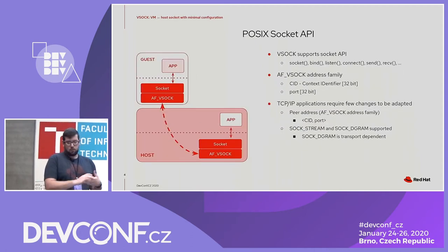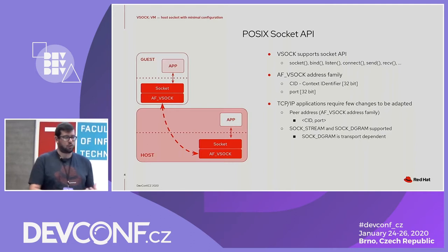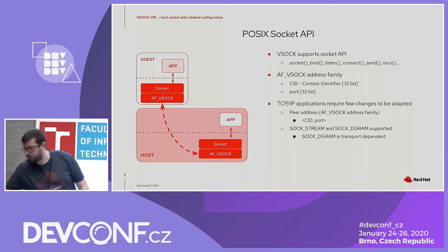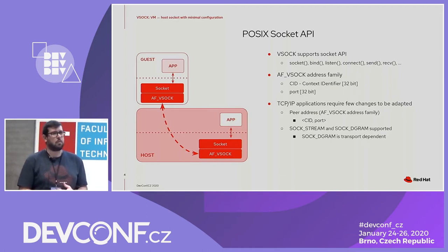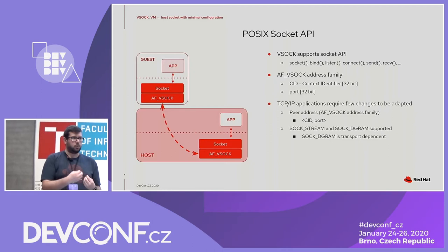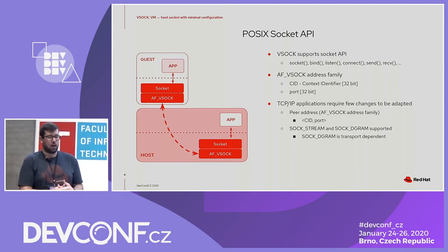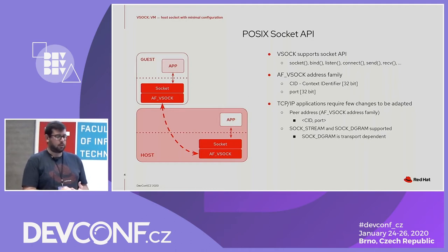An application can use socket API such as bind, listen, send, and receive to create a communication channel between guest and host using VSOCK. The address family to use is AF_VSOCK, and the VSOCK socket is addressed by a 32-bit context identifier that identifies the VM or the host, and a 32-bit port that identifies the service. To adopt an existing TCP application to use VSOCK, the only thing to change is the peer addressing using the VSOCK address family. Stream sockets are supported by every transport; datagram is transport-dependent.